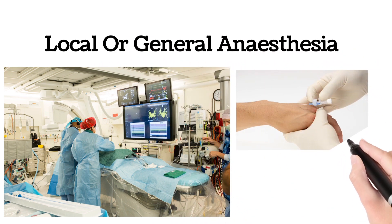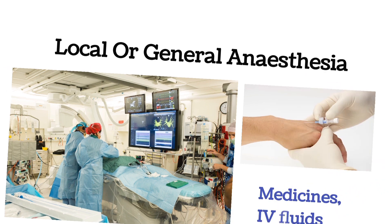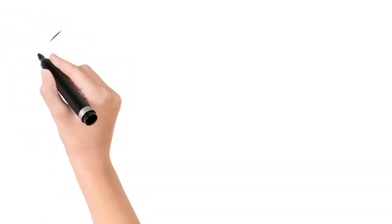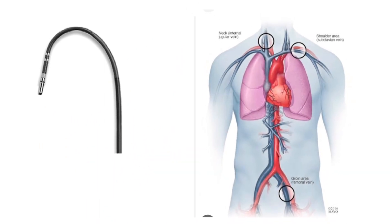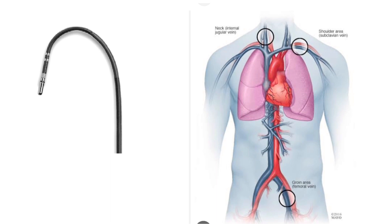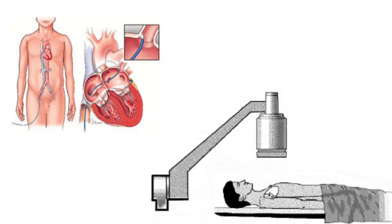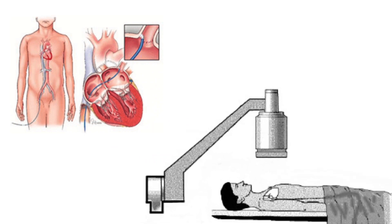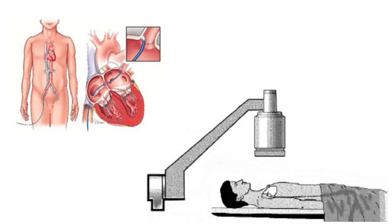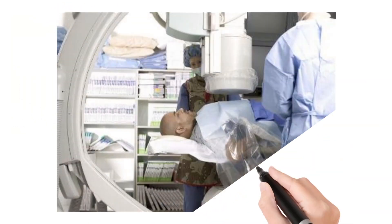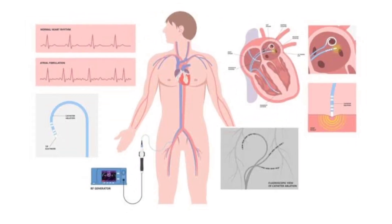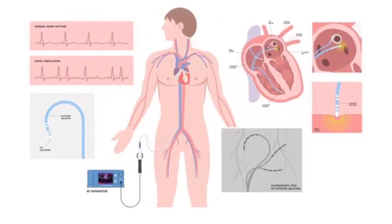Firstly, an IV line is placed so that medicines and intravenous fluids are passed. During the EP test, a tube-like catheter is inserted from the neck or from the groin area. The doctor inserts these tubes into the blood vessels, and these tubes are guided into the heart. Once the tubes are in the correct place, the catheter has sensors placed on its tip.